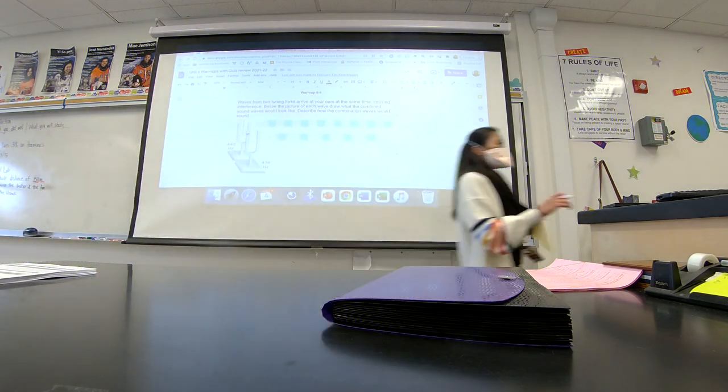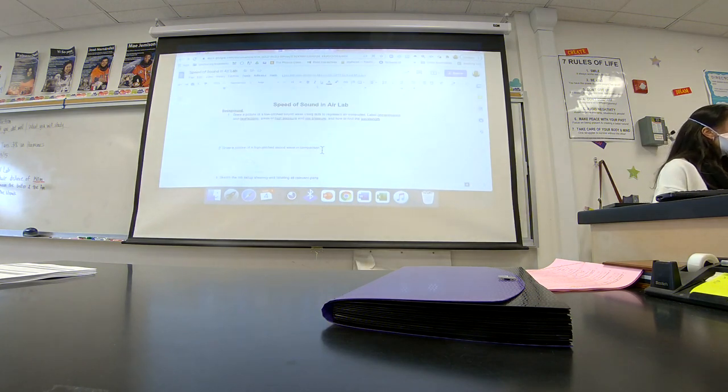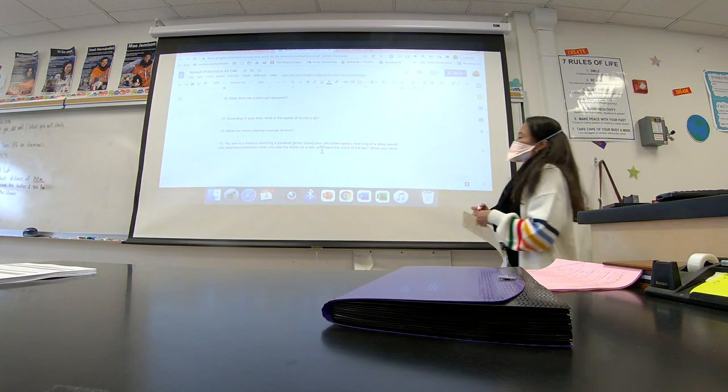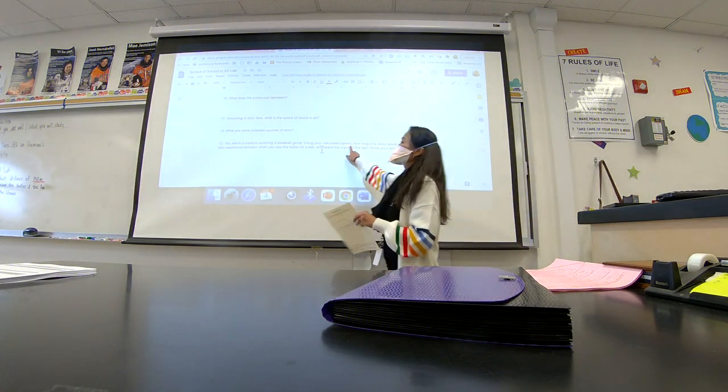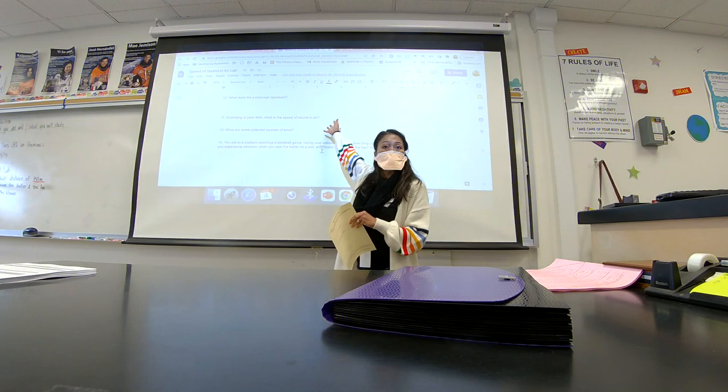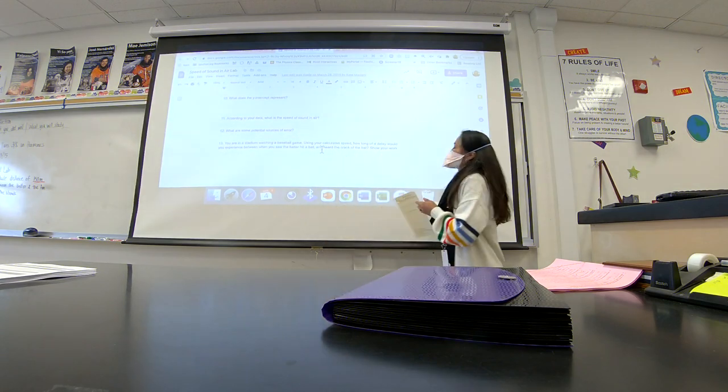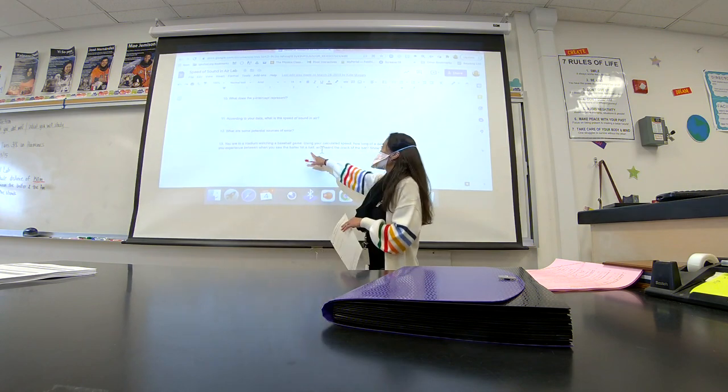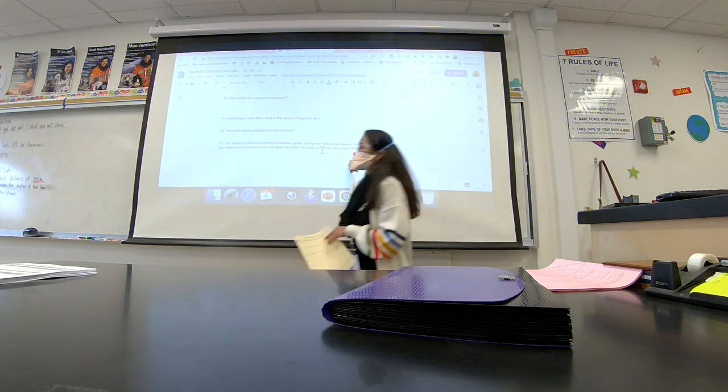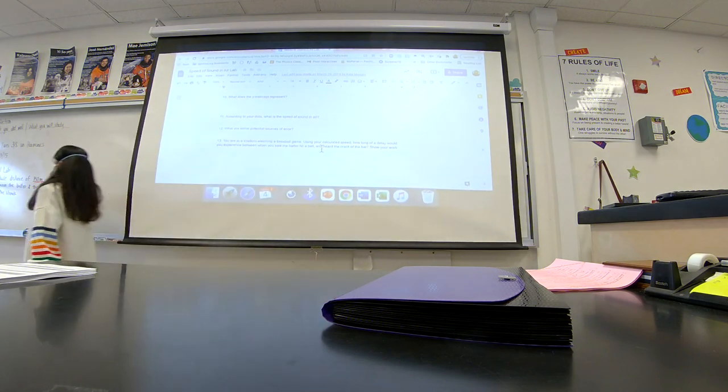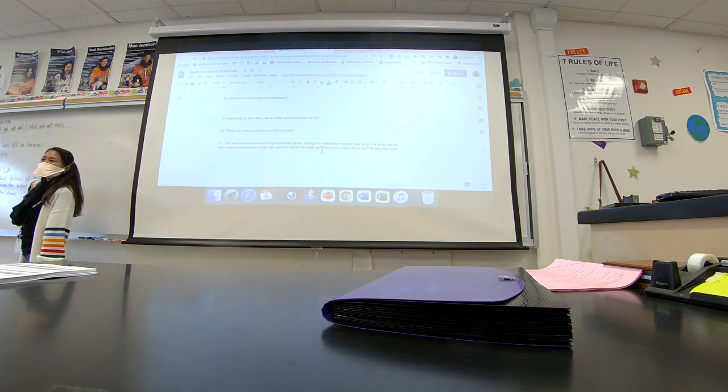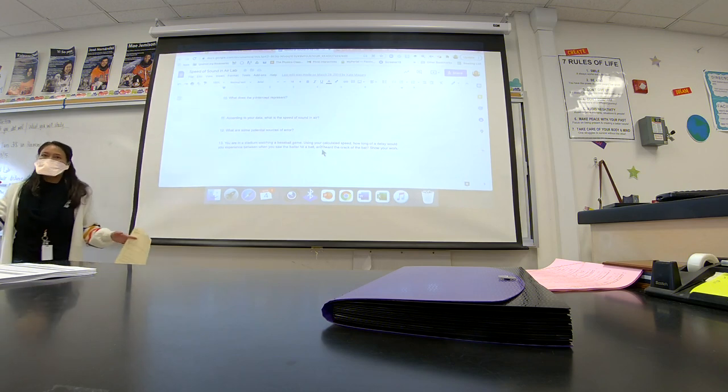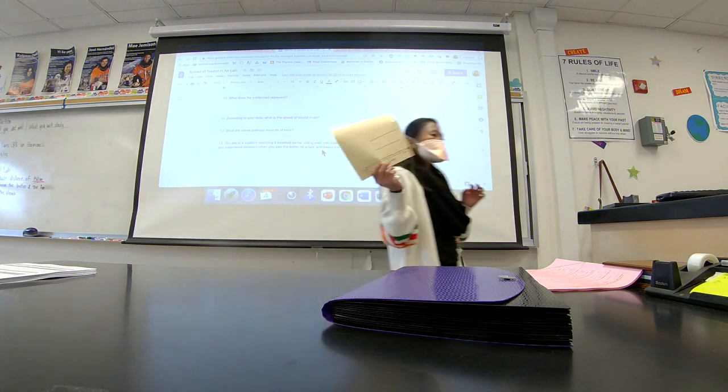So for number 13, it says that you're at a baseball stadium, and you are going to use your calculated speed, so the speed you get from the lab, to determine how long the delay would be when you see the batter hit the ball, and then hear the crack of the ball. So you need the distance to calculate that. The distance I'm going to give you is 150 meters between the batter and the fan that's standing in the stance.